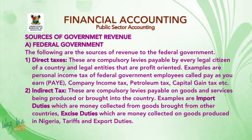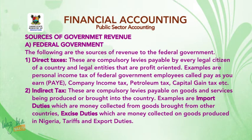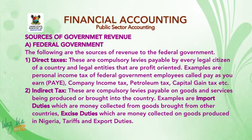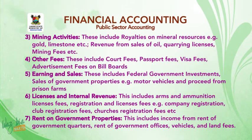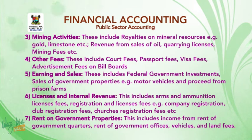Two, indirect taxes — these are compulsory levies payable on goods and services being produced or brought into the country. Examples include import duties (money collected from goods brought from other countries), excise duties (money collected on goods produced in Nigeria), tariffs, and export duties. Three, mining activities — these include royalties on mineral resources such as gold and limestone, revenue from sales of oil, quarrying licenses, and mining fees.